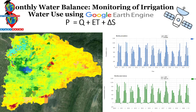Hello everyone, welcome to the Study Hacks Institute of GIS and Remote Sensing. Today I will discuss a very important topic: how we can monitor irrigation water use using Google Earth Engine, and also how we can monitor the monthly water balance using Google Earth Engine. This is a very important topic for the agriculture sector.